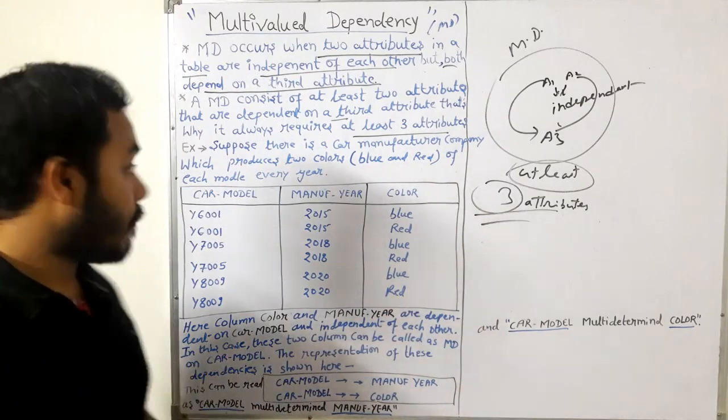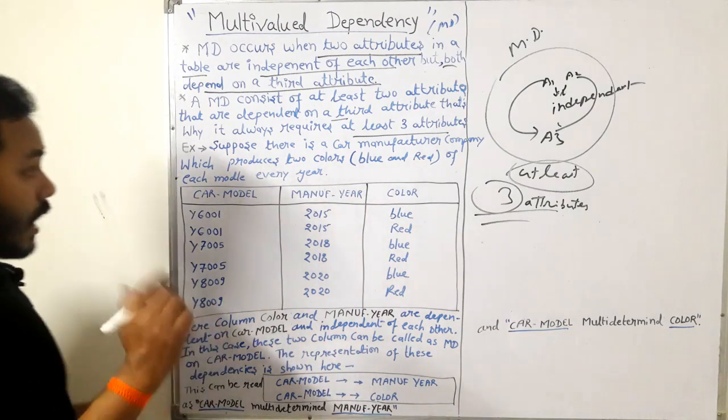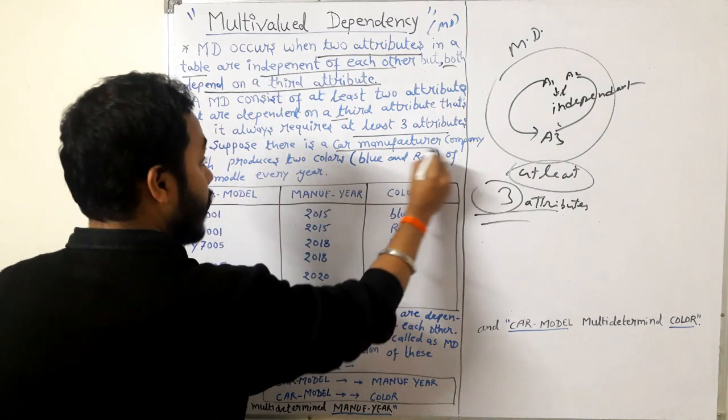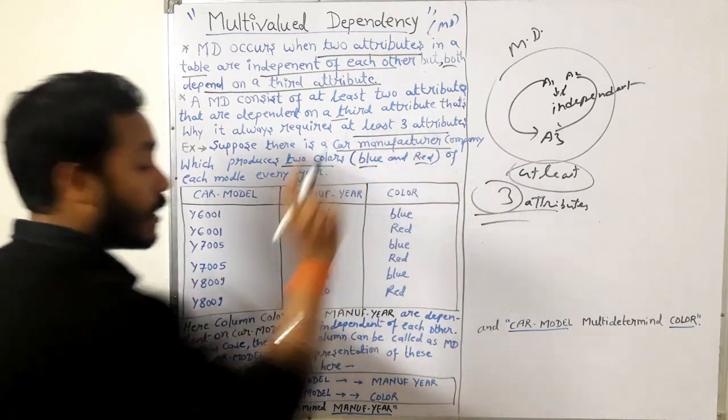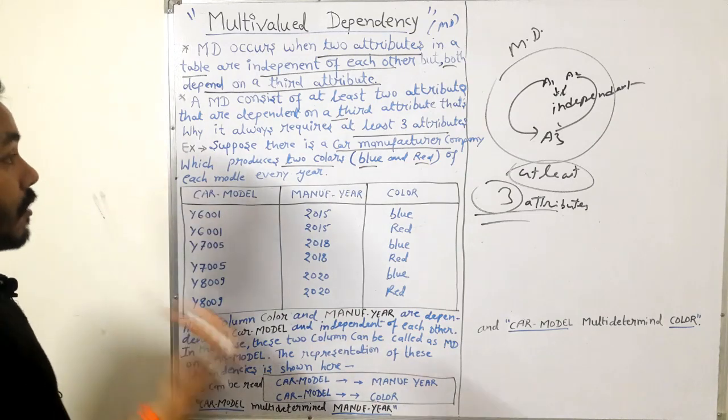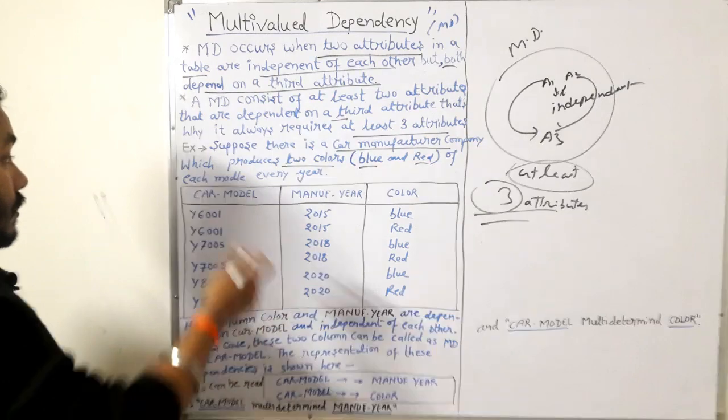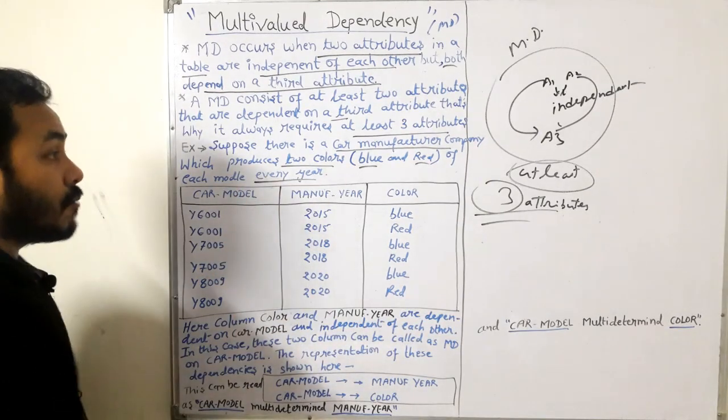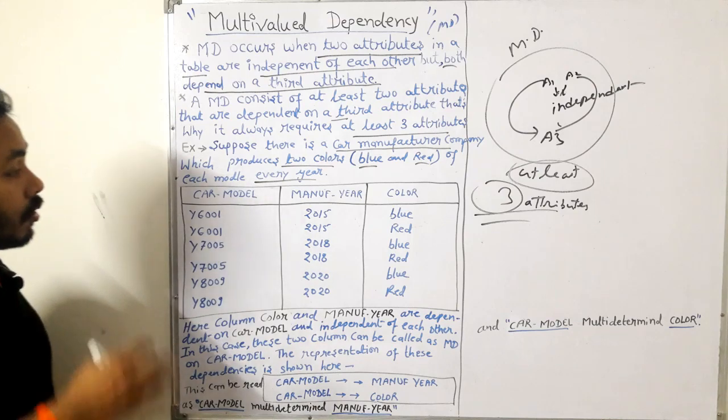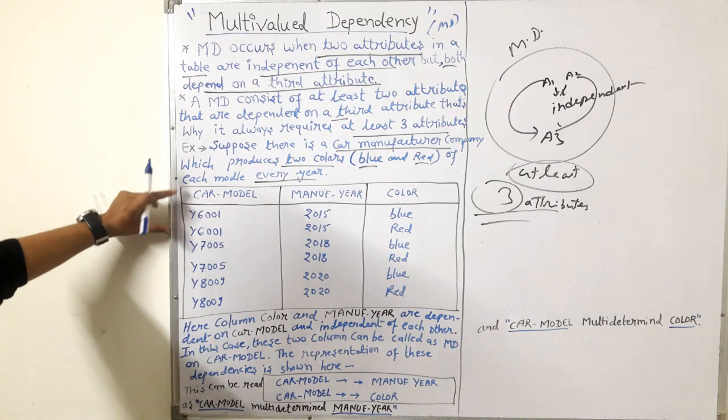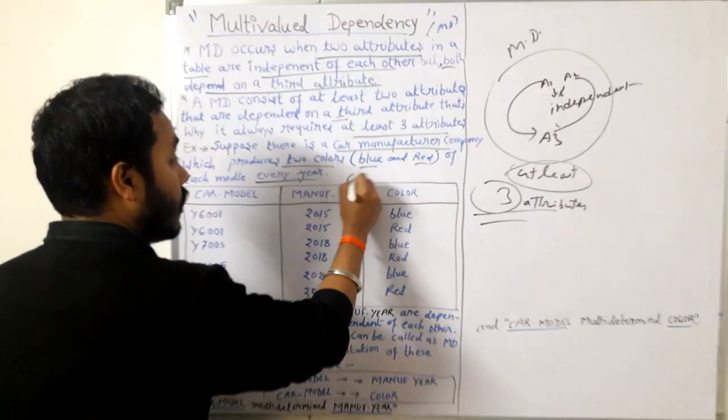This concept will be more clear when I go through one example. Let's take an example. Say there is a car manufacturer company which produces two colors, blue and red. Different models that car manufacturer produces every year.